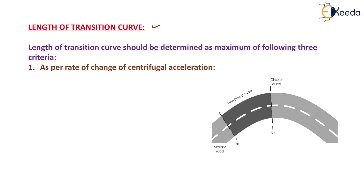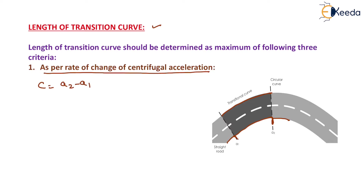We need to find the length of the transition curve, which is generally determined from three criteria. The first criterion is based on the rate of change of centrifugal acceleration. A straight road and a circular curve are shown, with a transition curve provided in between. Here the acceleration is a1 and at the circular end the acceleration is a2. The rate of change of centrifugal acceleration equals (a2 − a1) / time.